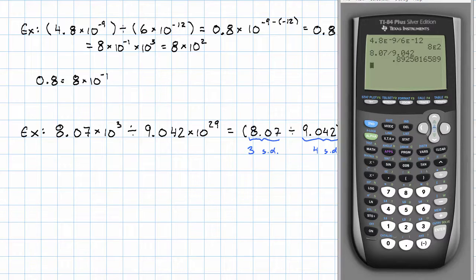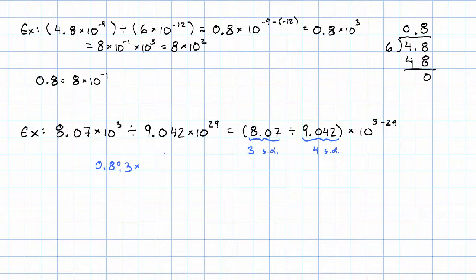So, I'll have 0.893 times... Okay, what power of 10 do I have? 3 minus 29 is negative 26.